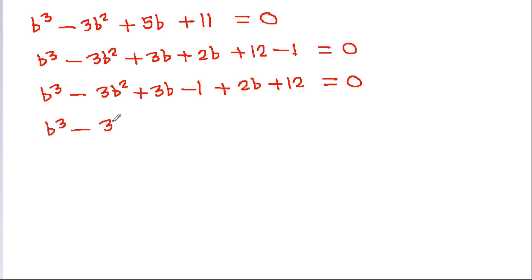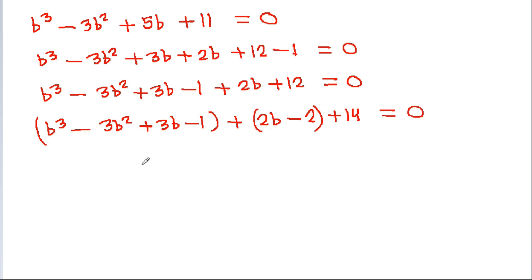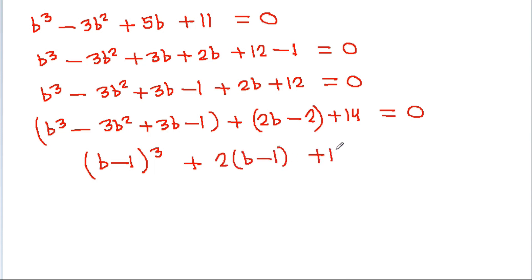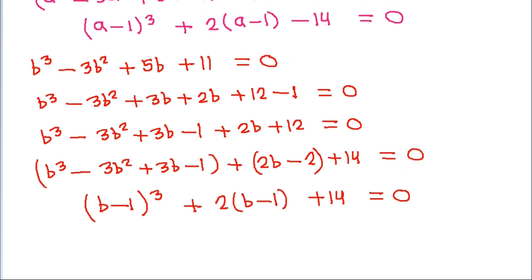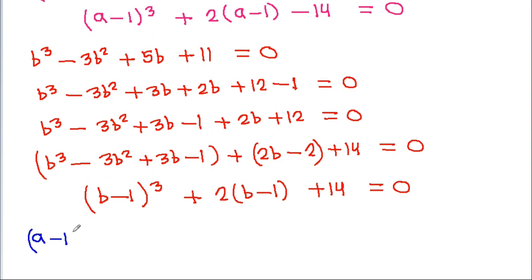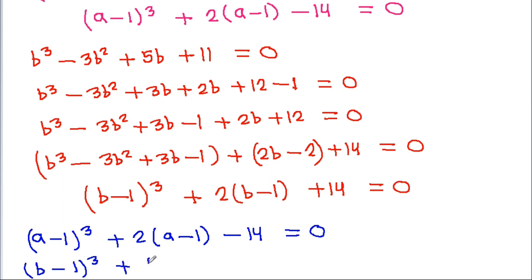After rearranging the b equation, we get b cubed minus 3b squared plus 3b minus 1, minus 2b plus 12 equals 0. This gives us (b minus 1) cubed plus 2(b minus 1) plus 14 equals 0.